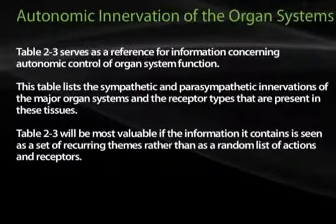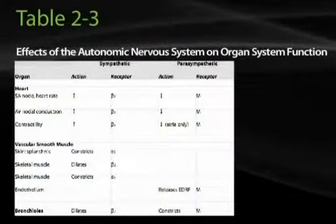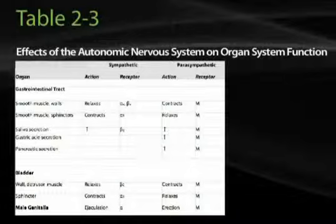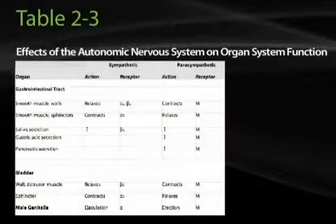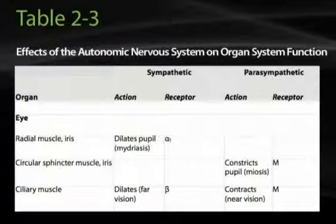Table 2-3 serves as a reference for information concerning autonomic control of organ system function. This table lists the sympathetic and parasympathetic innervations of the major organ systems and the receptor types present in these tissues. Table 2-3 summarizes the main effects on various organs, with the recurring theme that sympathetic stimulation prepares the body for action, whereas parasympathetic stimulation prepares the body to recover resources necessary for a future action. The reader is referred to these tables for further reference.